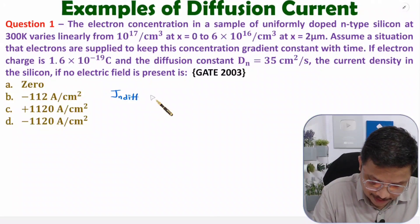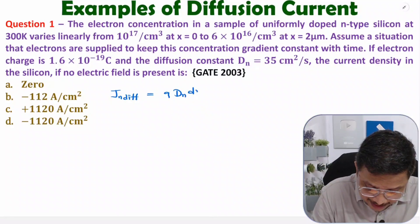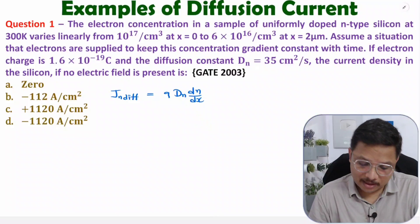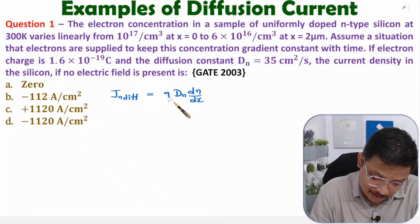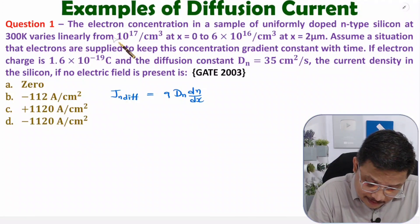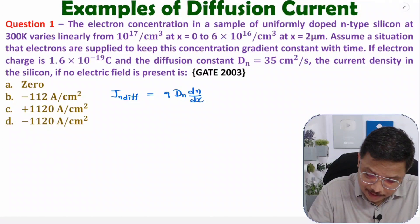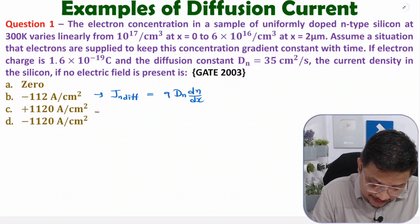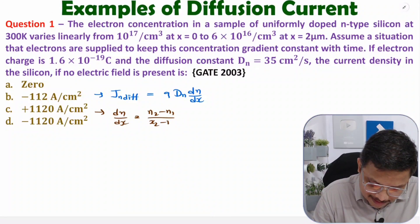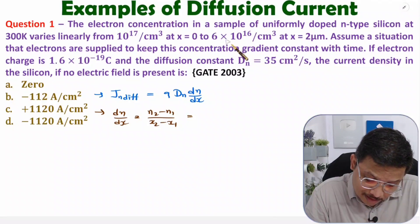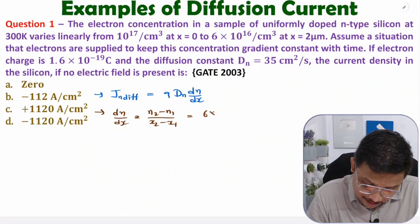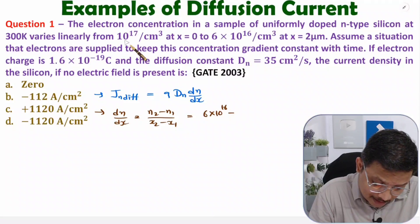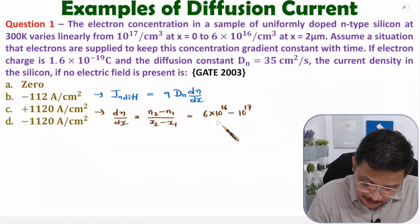For n-type material, the diffusion current density is: J_n(diffusion) = q × D_n × (dn/dx). The charge q is given, and D_n is also given, so we need to find dn/dx from the data. To calculate dn/dx, that is simply (n2 - n1) / (x2 - x1). Here n2 is 6×10^16.